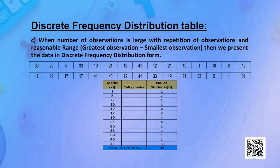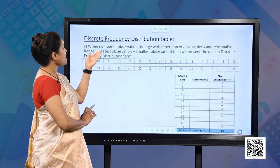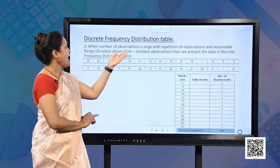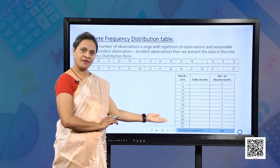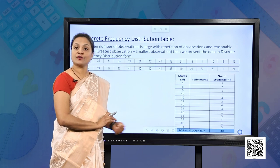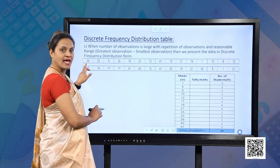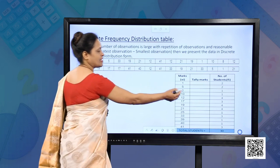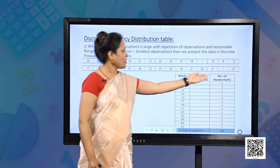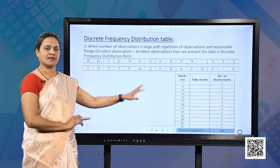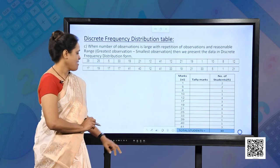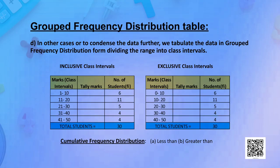Data can also be arranged in a discrete frequency distribution table. When there are a number of observations and there is repetition in observations, we form this type of table. You remember putting tally marks — keep looking at the observation and put the tally marks. This gives you the frequency of each observation. To condense this information further, we can also form a grouped frequency distribution table.